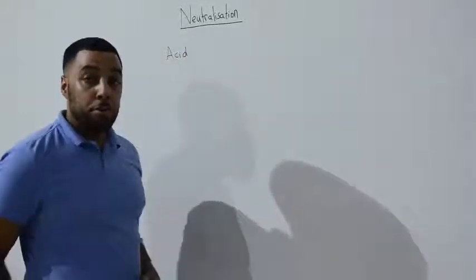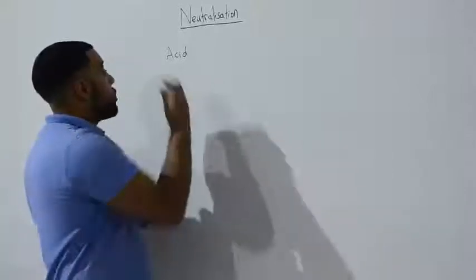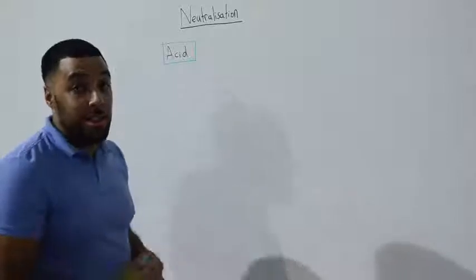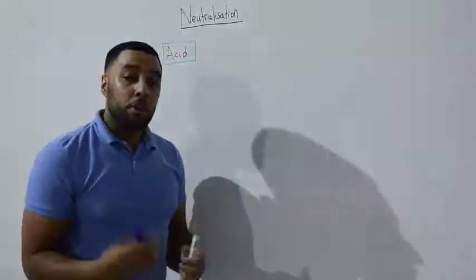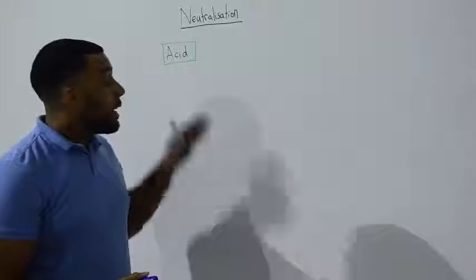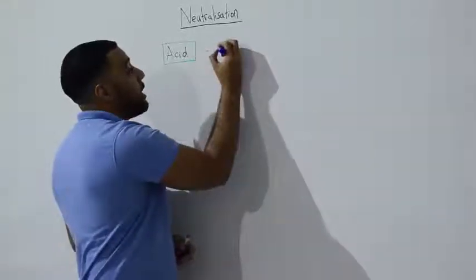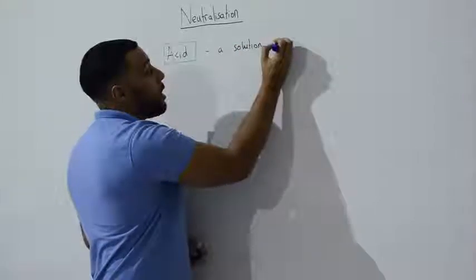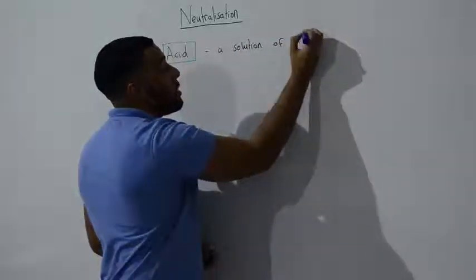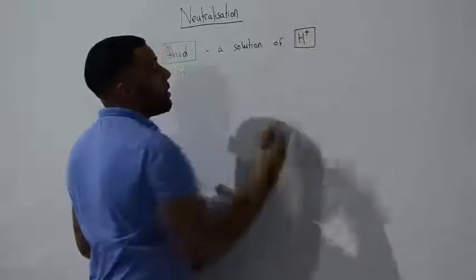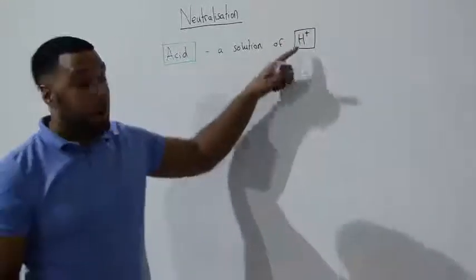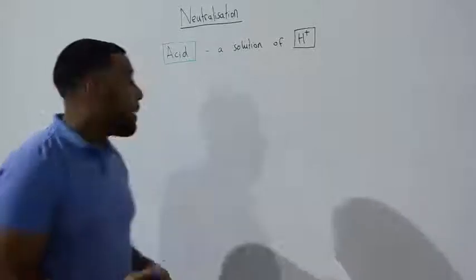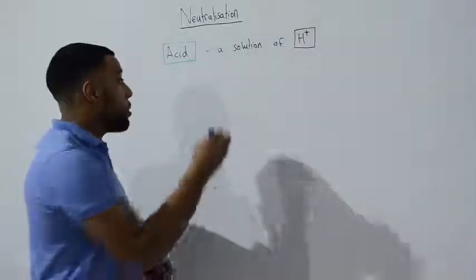We've seen in previous videos that acids have a sharp taste and that they're usually found in citrus fruits. But chemically, what is an acid? Chemically, an acid is a solution of hydrogen ions. We have aqueous hydrogen ions. This happens because all acids are soluble in water.